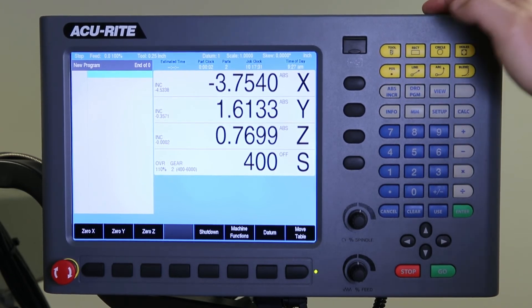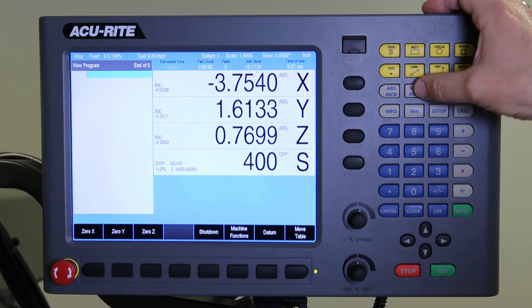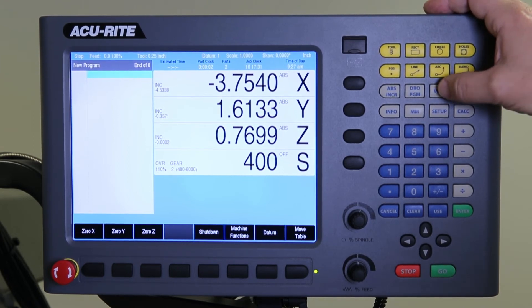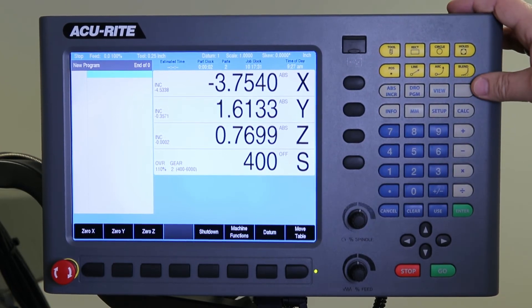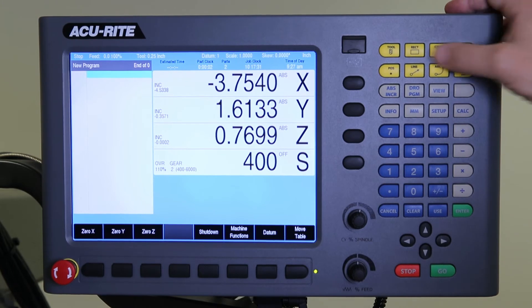Obviously toggling between absolute and incremental. Your DRO program toggle. View allows you to view different perspectives of the program, navigate around the view mode. This is a hot key that you can map any of the CAN cycles to.